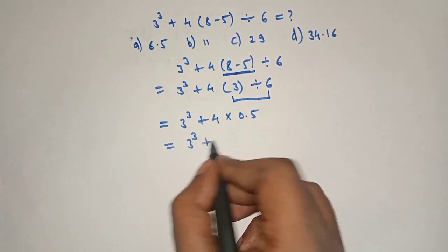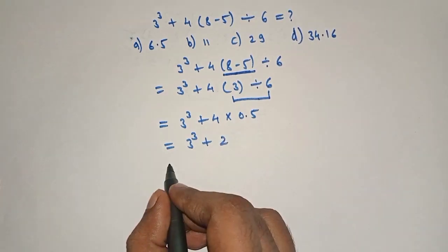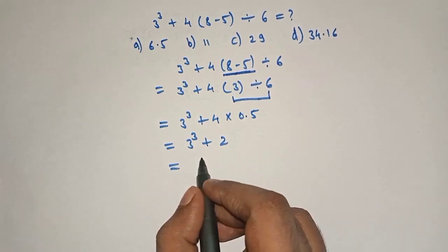Which is equal to 3 raised to 3 plus 4 into 0.5, which is 2, which is equal to 3 raised to 3, which is 27.